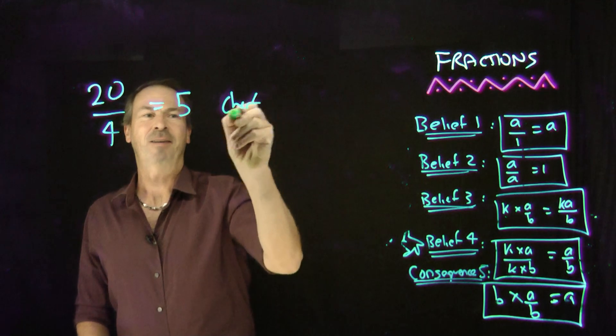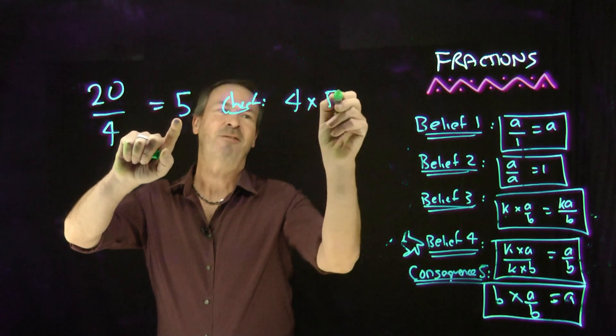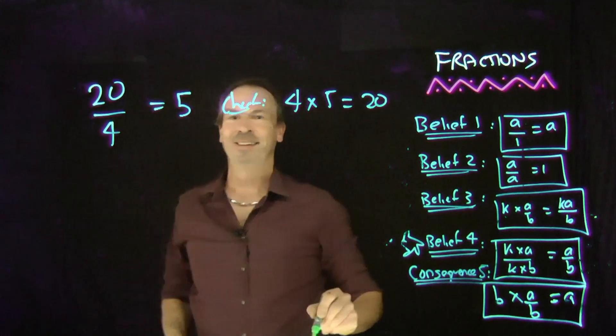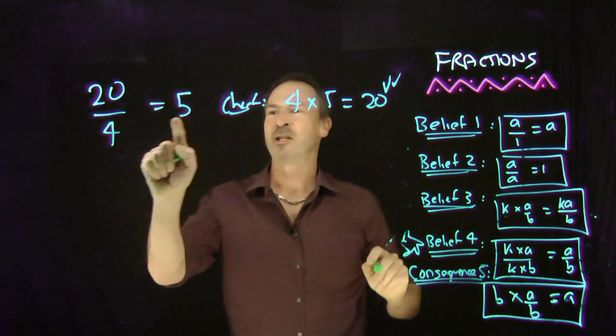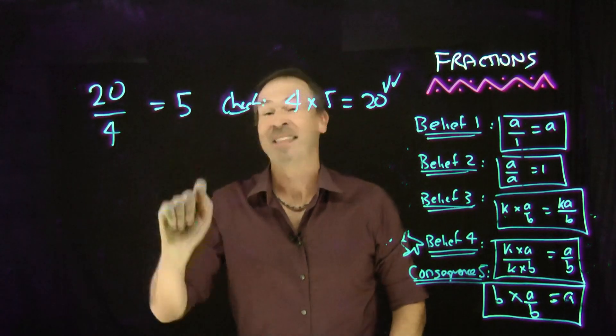Here's my check. Does 4 times my guess, does 4 times 5 give the numerator a 20? In this case, yes it does. 4 times 5 is indeed 20. Beautiful. It passed my check. And in fact, that turns out to be correct.